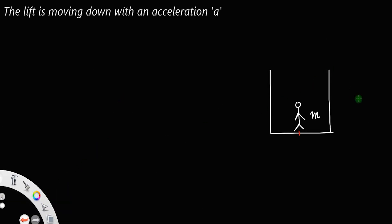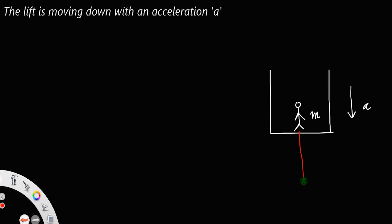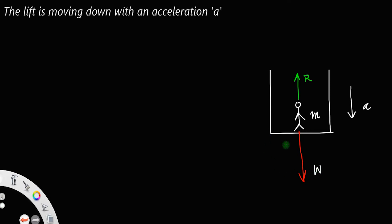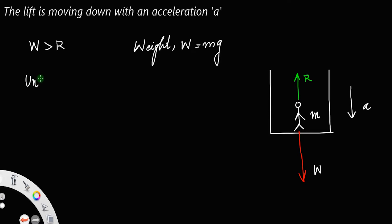Now, what happens when the lift is moving with an acceleration in the downward direction? Here also the different forces acting on the person are his weight and his reaction. In this case, weight will be greater than the reaction since the lift is moving downward — so W is greater than R. Weight W equals mg, and the unbalanced force will be the greater force minus the lesser force: W minus R — call that equation number 1.